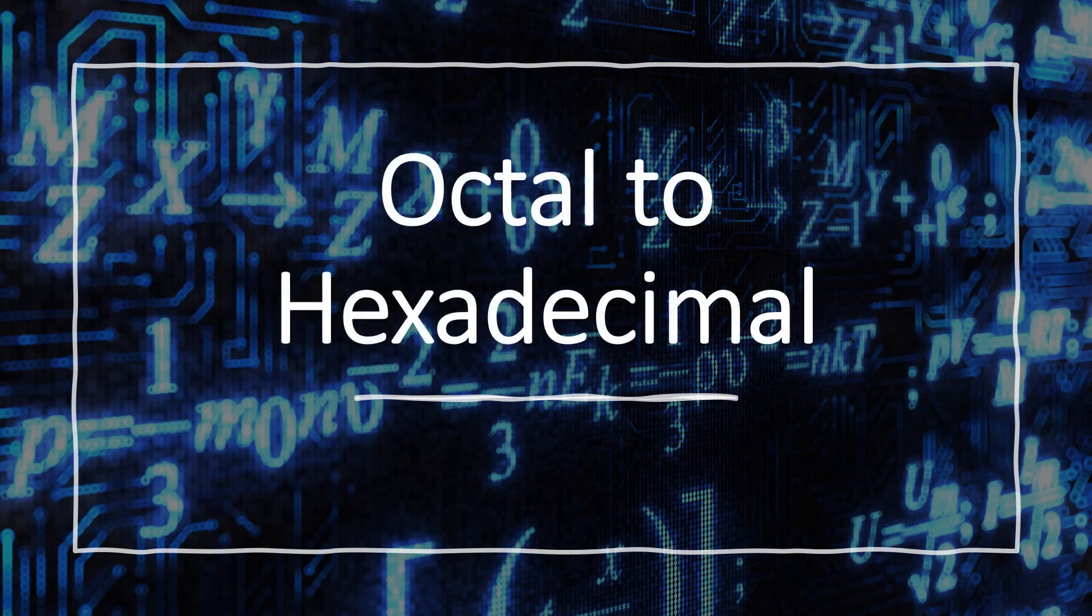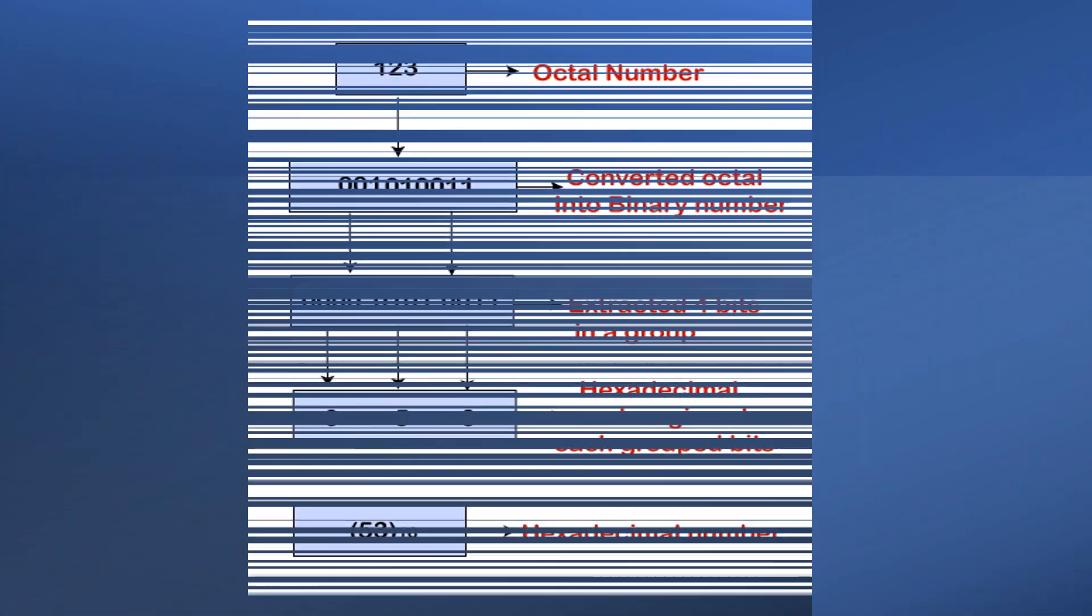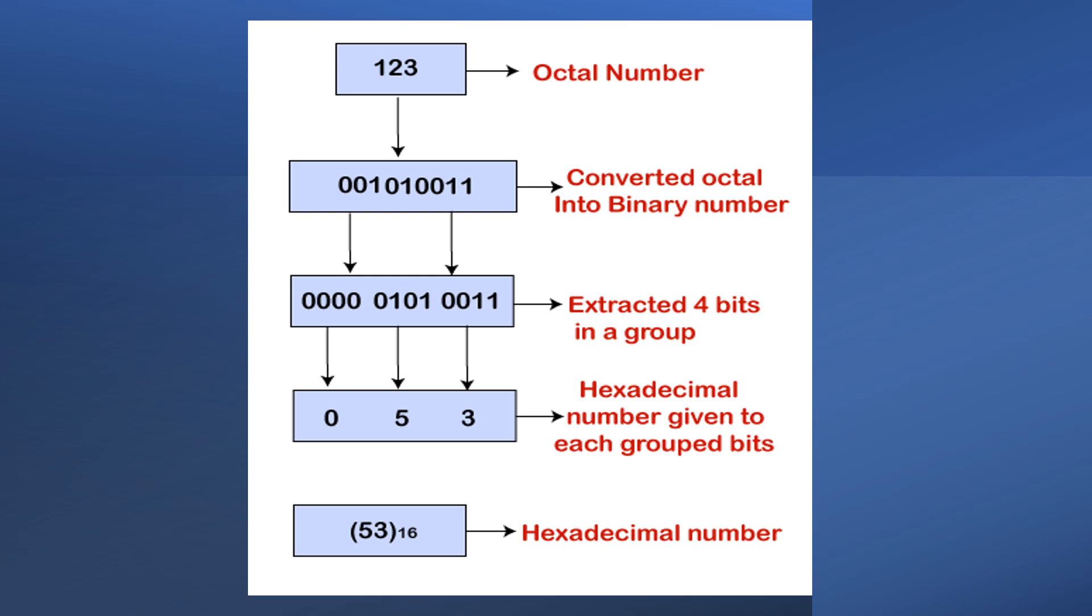Converting octal to hexadecimal. First, write the octal number. Next, convert octal number into binary number. And divide the binary number you get into 4 bit groups from right to left corner. And last, write the relevant hexadecimal number for each group.